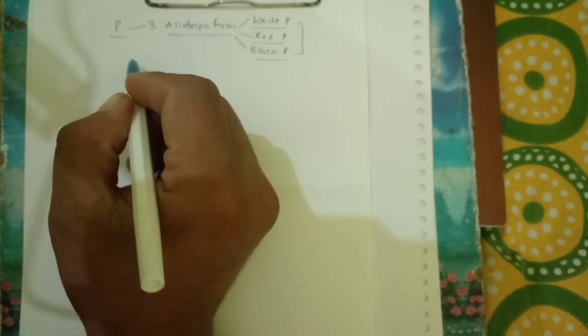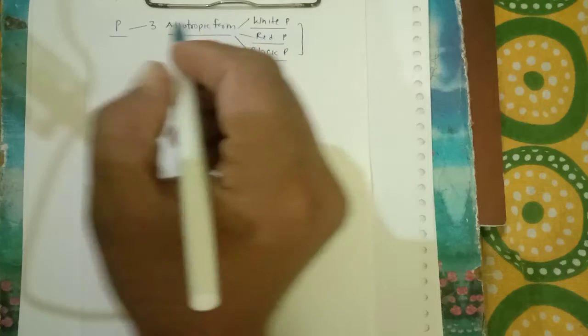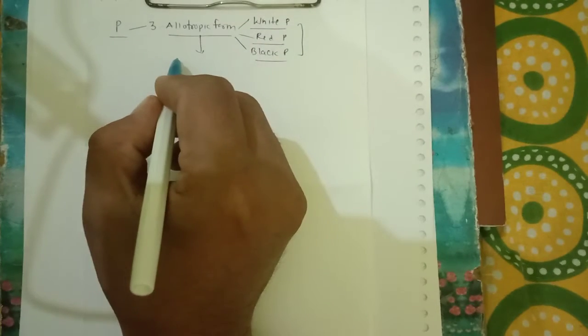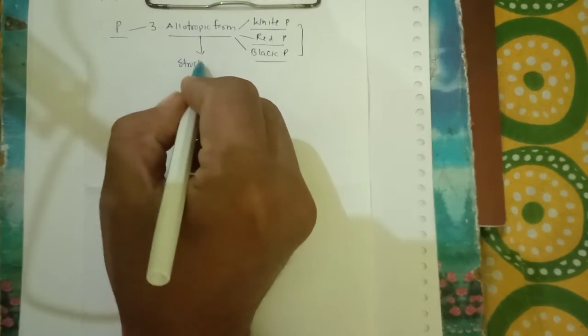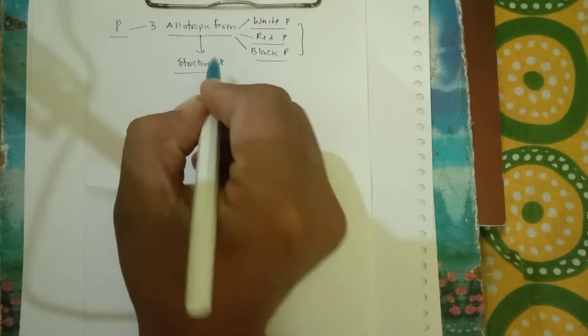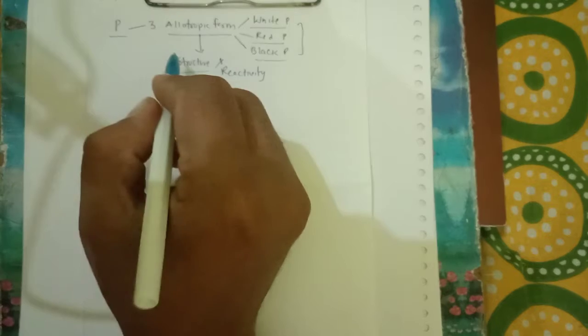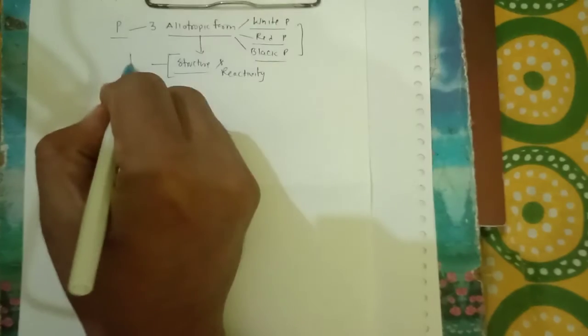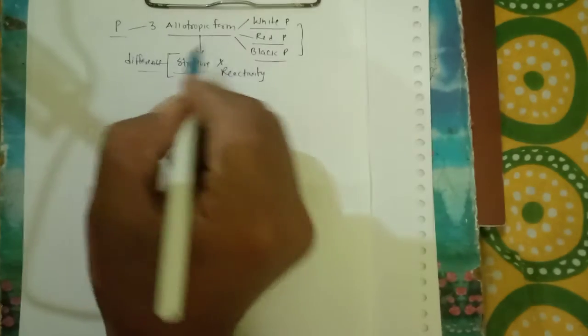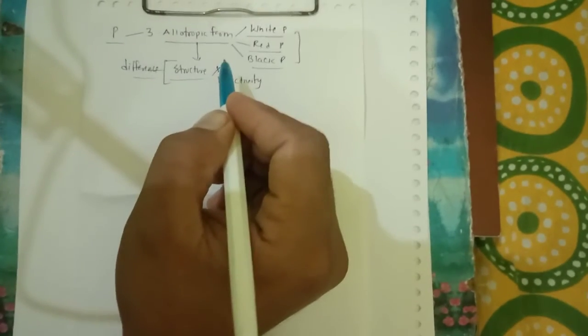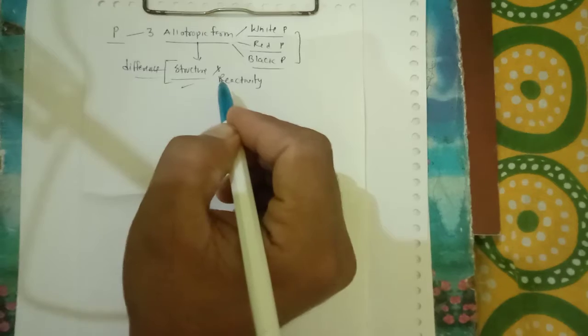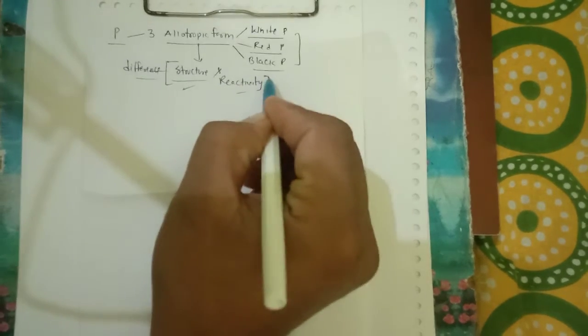Write the difference between these three forms on the basis of their structure and reactivity. What we have to write down? We have to understand the difference between these three allotropic forms on the basis of structure and reactivity.